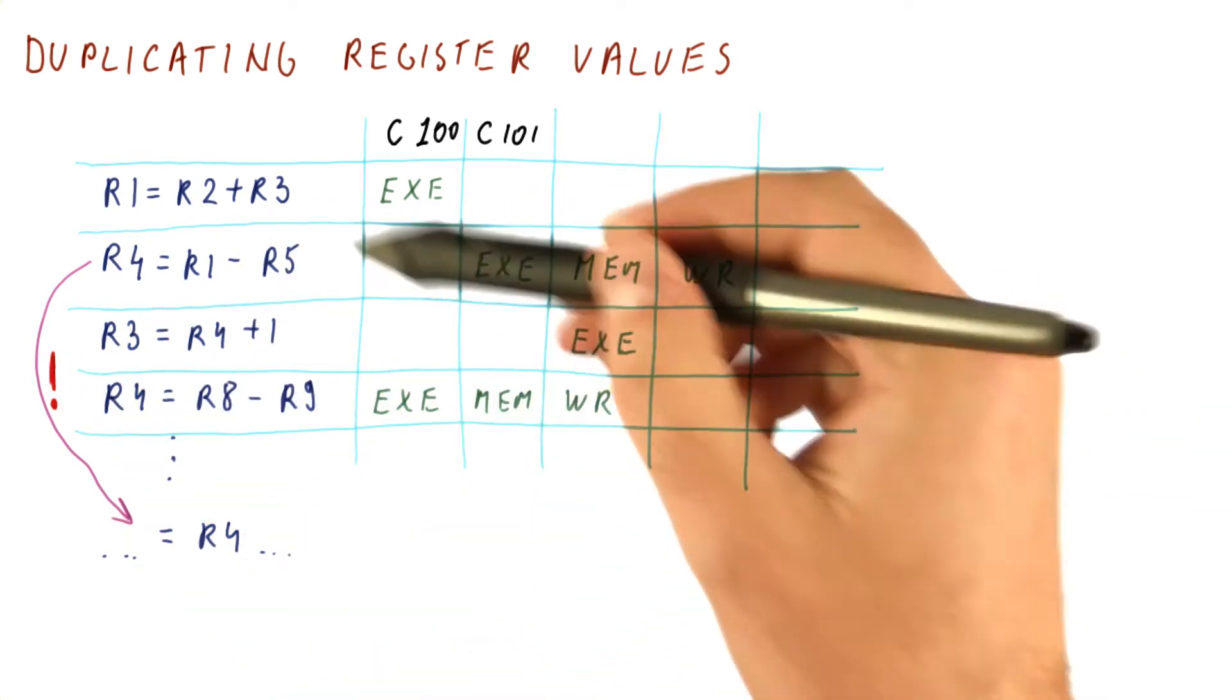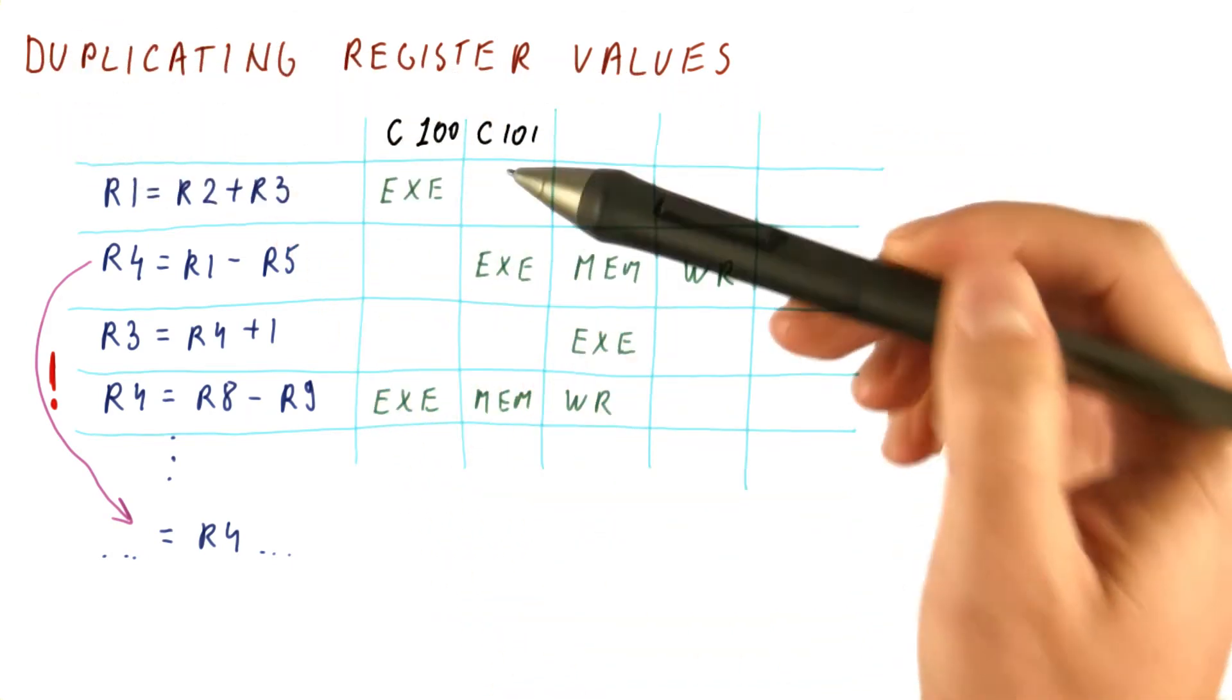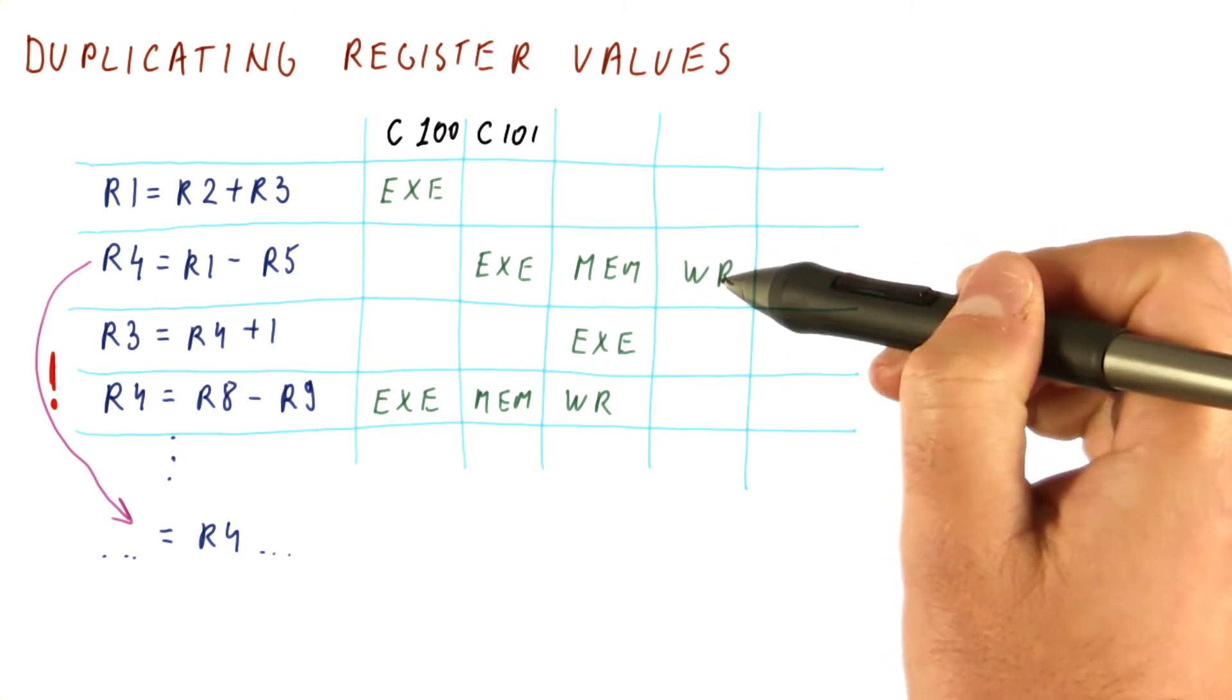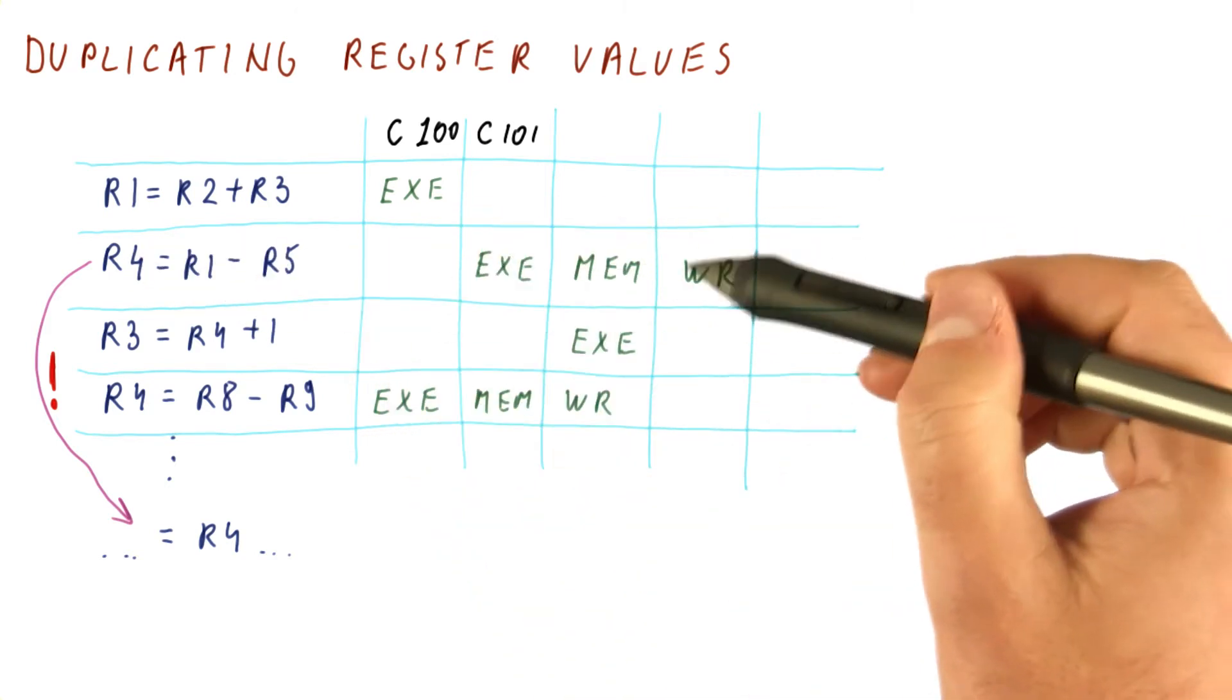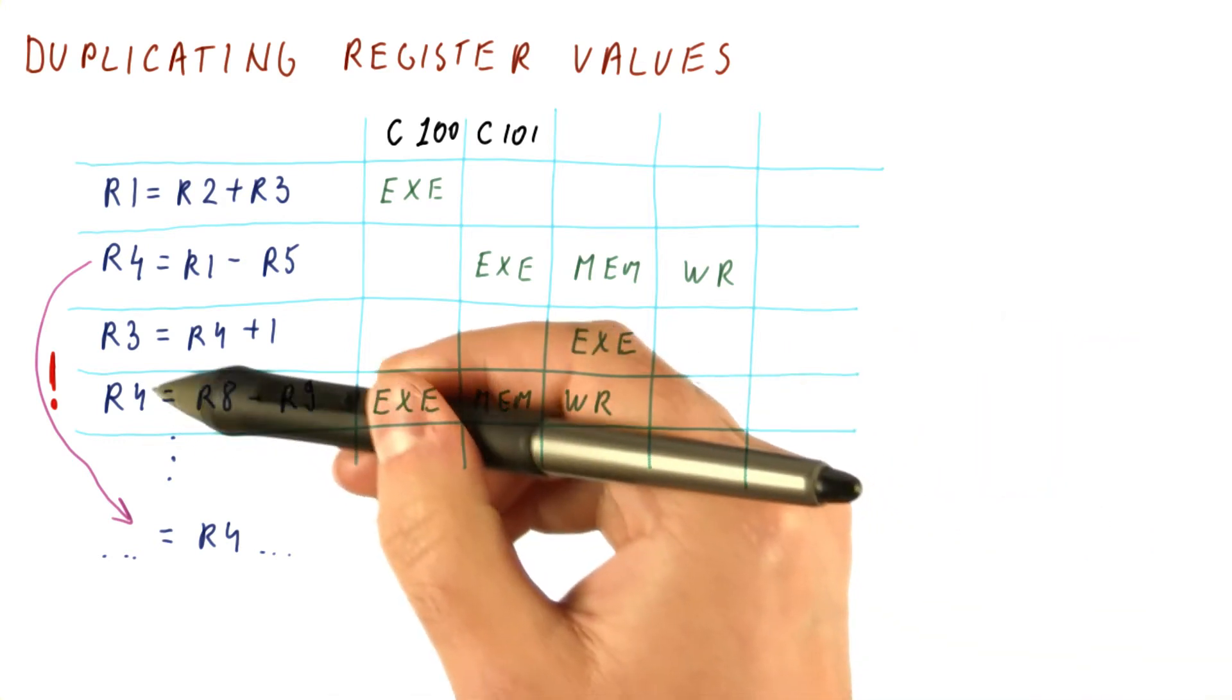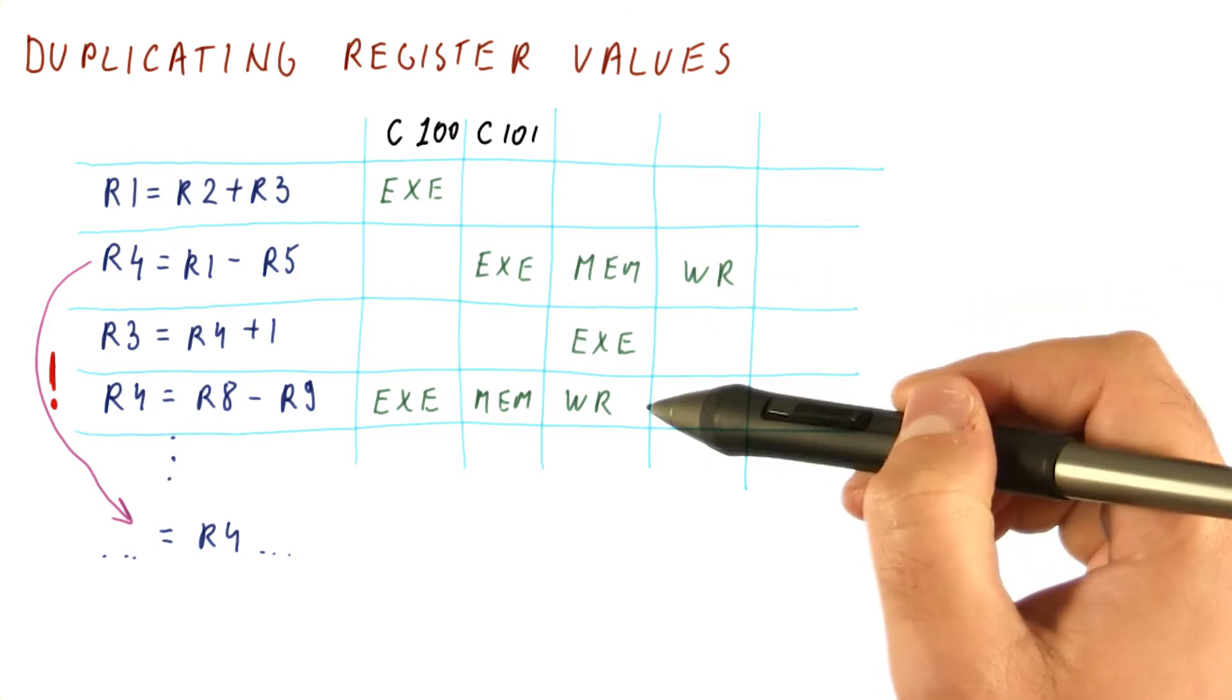So in order to fix this, one way is to again duplicate register values. So the idea is that when this instruction writes to register R4, it writes to a version of register R4, and then another value is stored to another version of R4, but we remember both versions. So that's why it's called duplication.